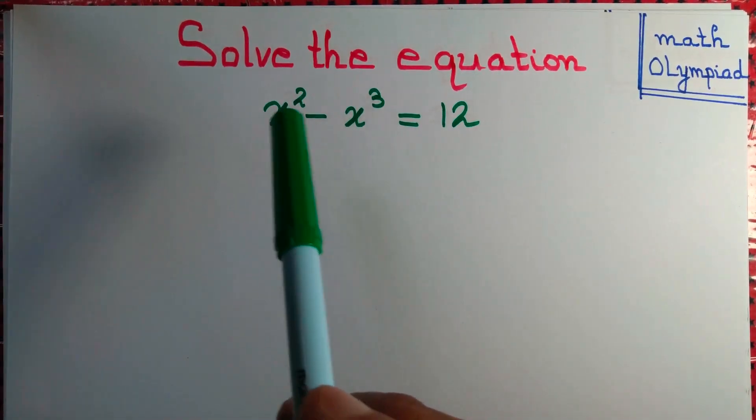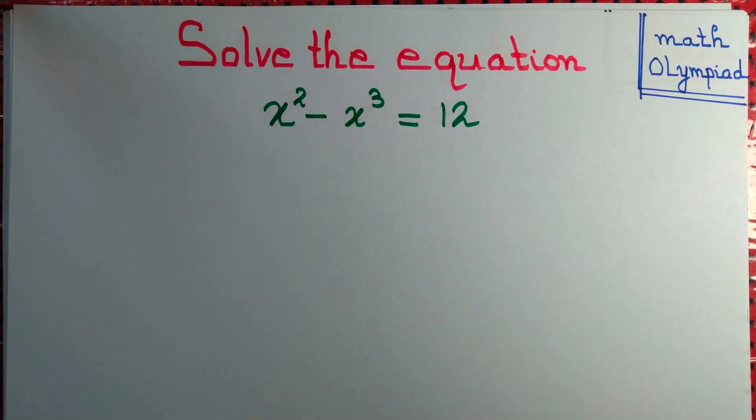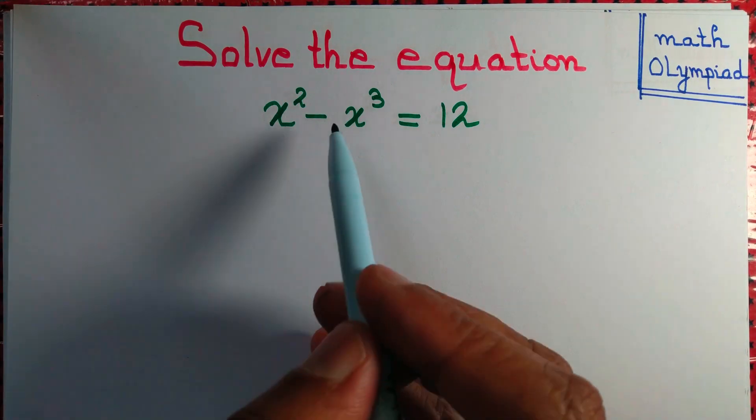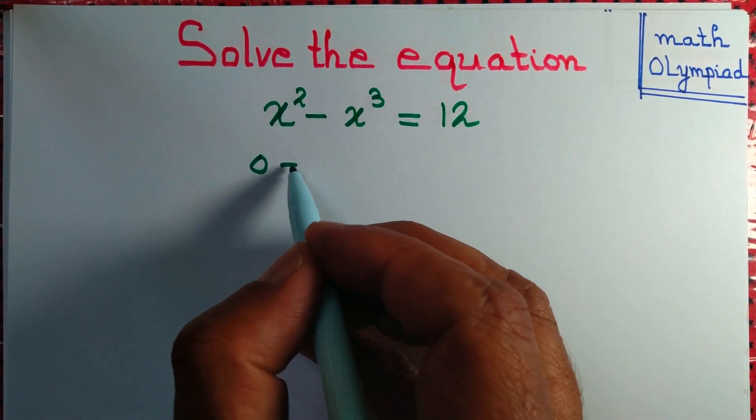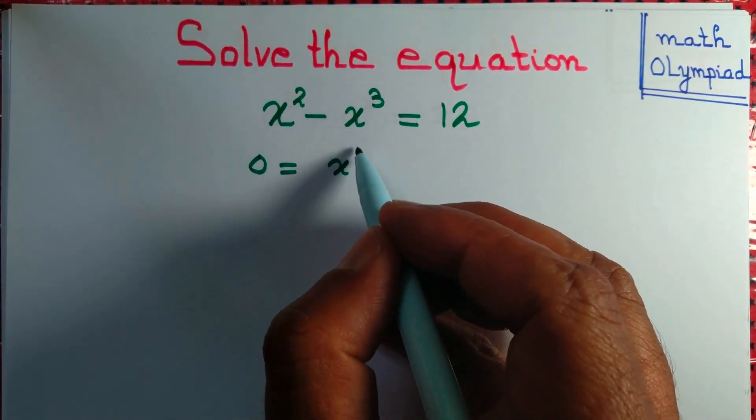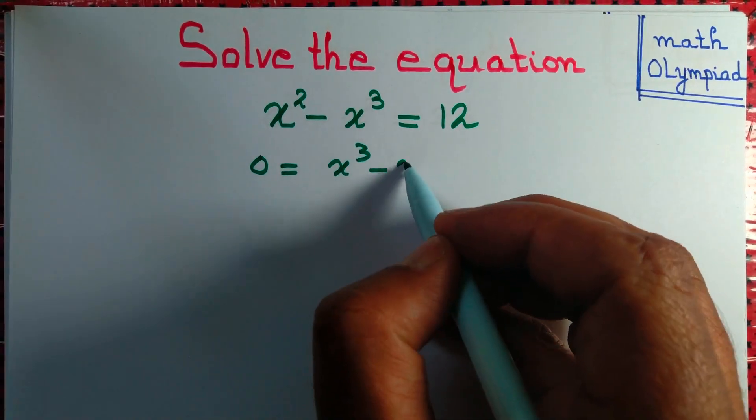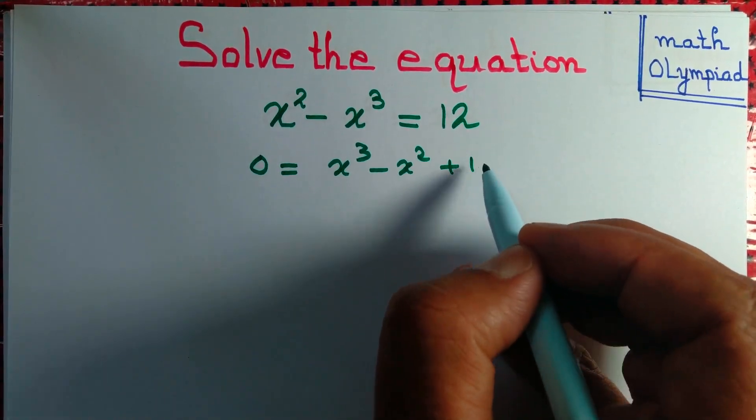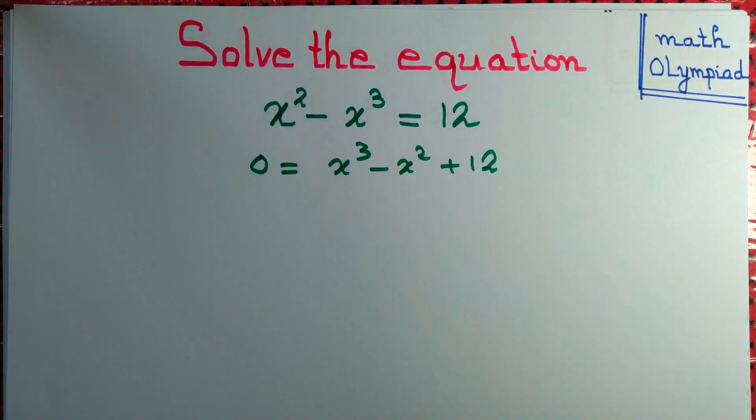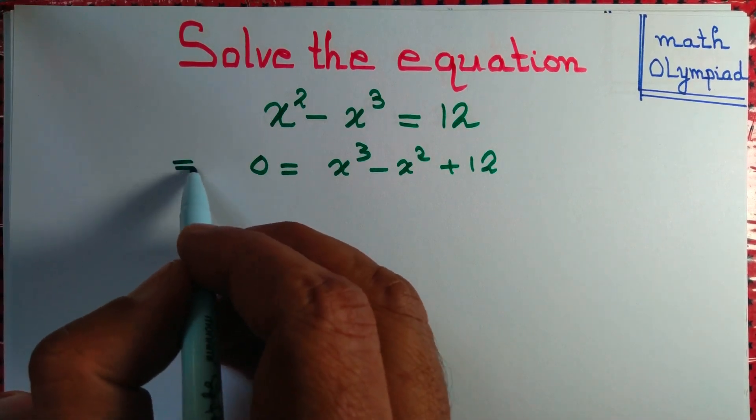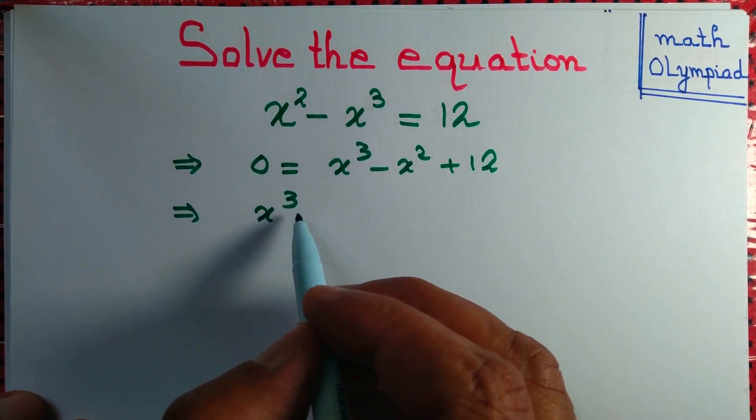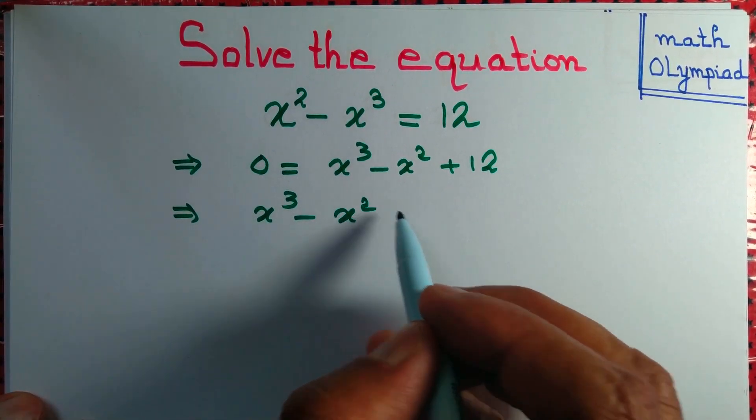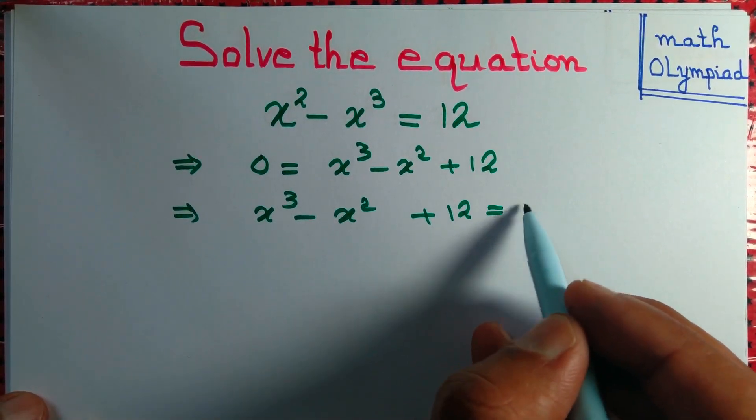Let us solve the equation x square minus x cube equals 12. Let us write this expression to the right hand side, so we have 0 equals x cube minus x square plus 12. Or we can say x cube minus x square plus 12 equals 0.